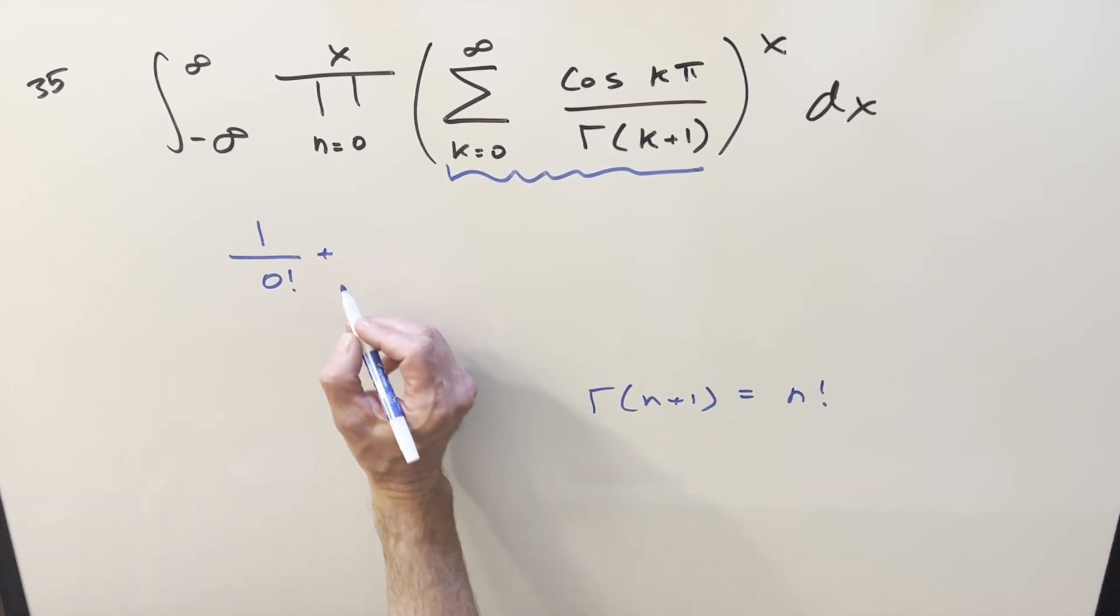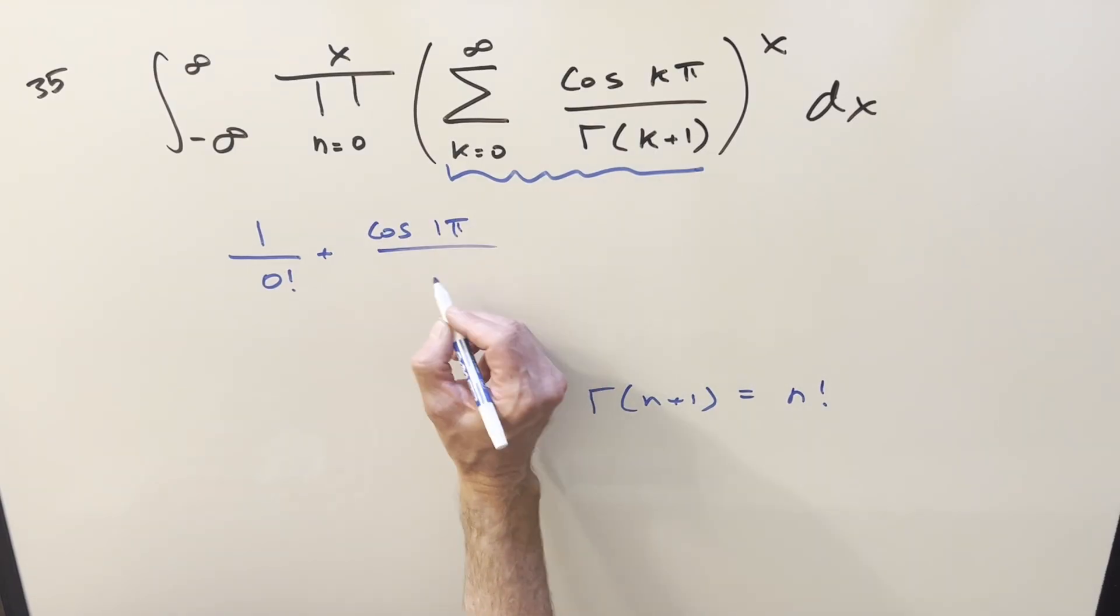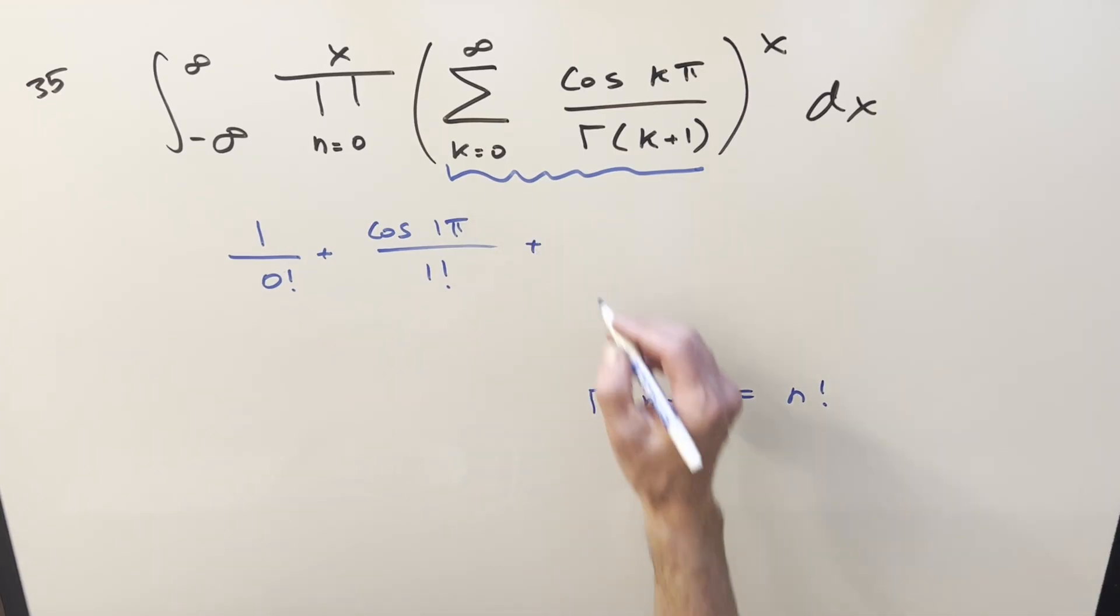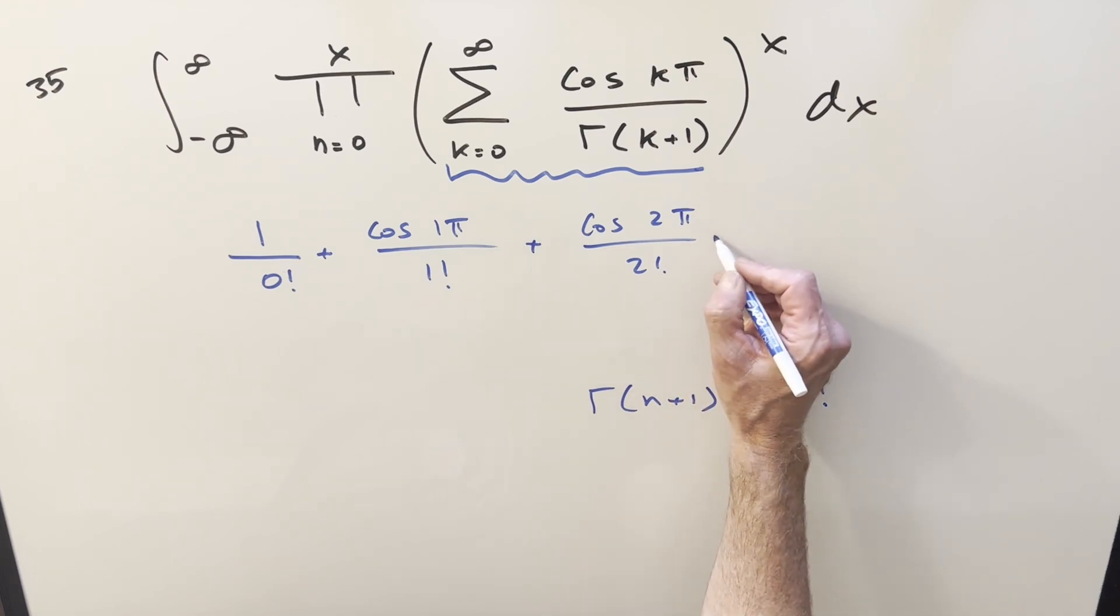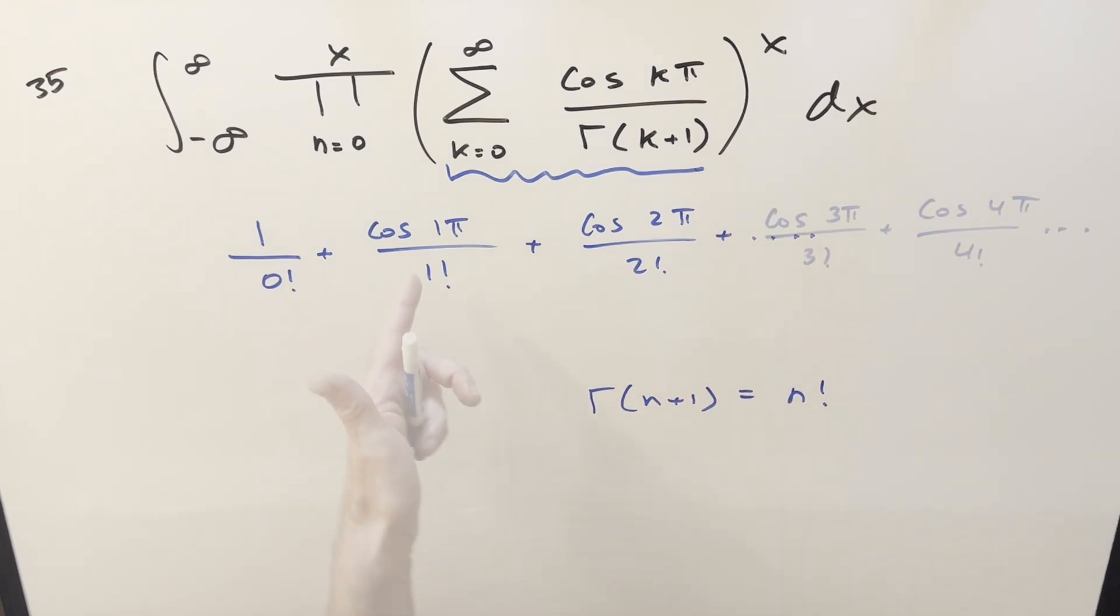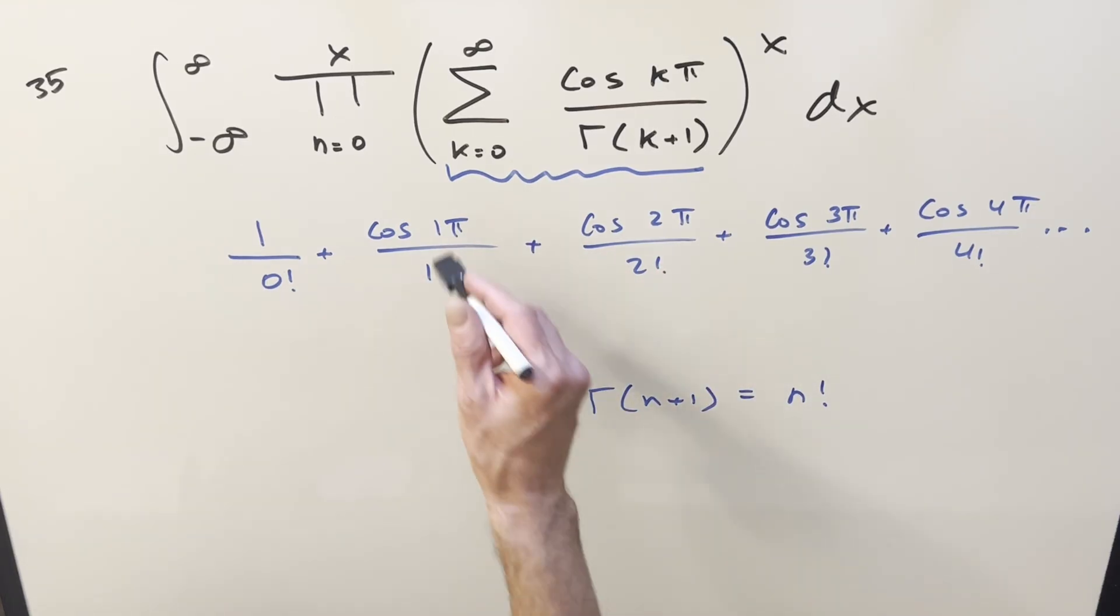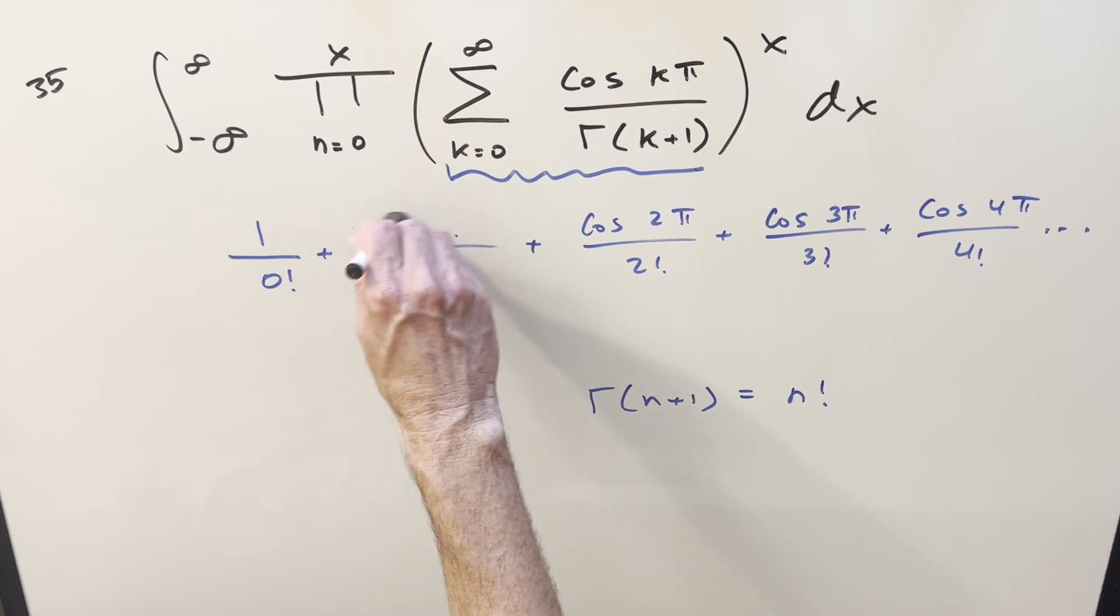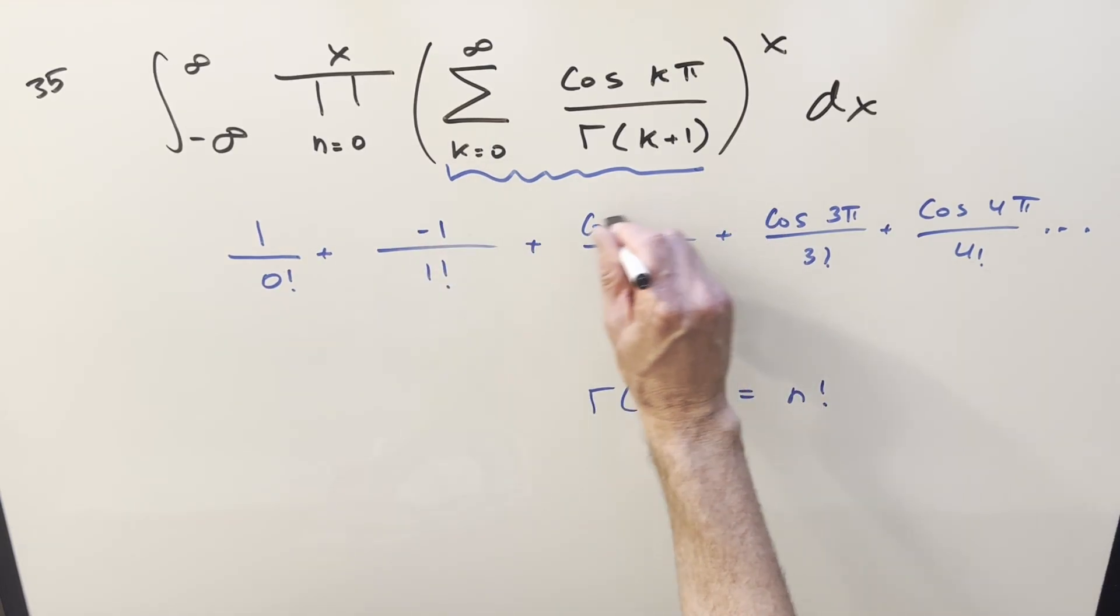And then for the next term, when k equals one, we have cosine of one pi over, now this becomes one factorial. We'll just do it all in terms of factorials because we know what's happening. Then the next one, cosine two pi over two factorial. And this thing is just going to keep going like this on and on to infinity. But the nice thing about integer coefficients here in front of the pi with the cosine, we know exactly what these are. Like cosine of pi, this is just going to be minus one. And cosine of two pi and all the even terms, the even coefficients, those are all going to be one.